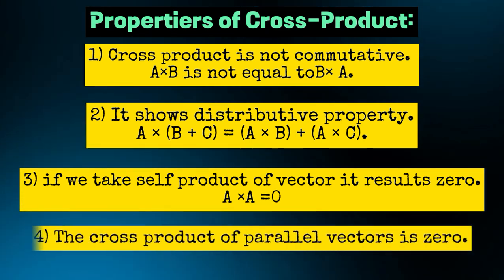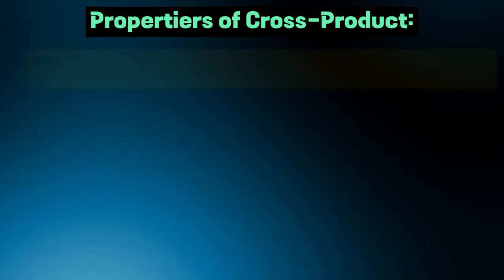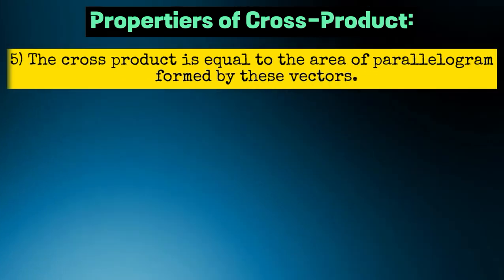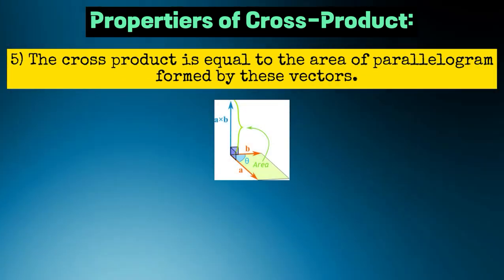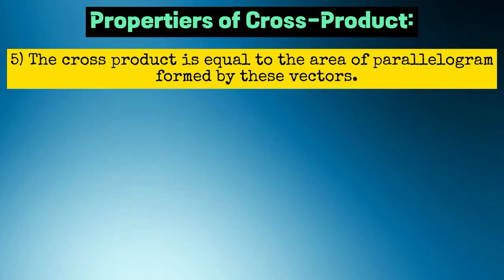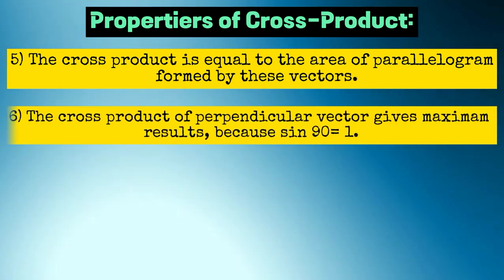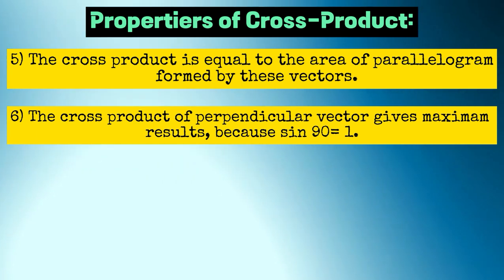Property 4: The cross product of parallel vectors is 0. Property 5: The cross product is equal to the area of parallelogram formed by these vectors. Property 6: The cross product of perpendicular vector gives maximum results, because sine 90 is equal to 1.